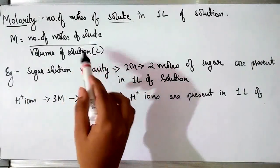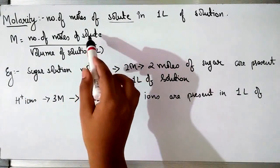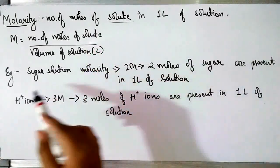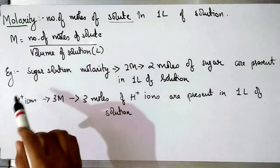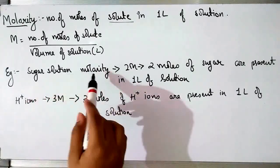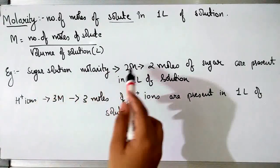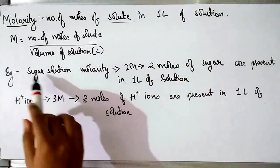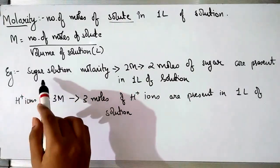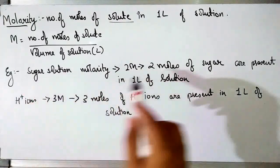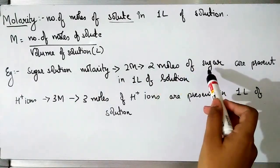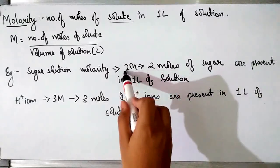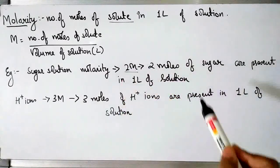The volume of solution should always be in litres and you have to calculate the number of moles of solute. For example, if the molarity of a sugar solution is 2M, it means that in this sugar solution, sugar is the solute, and 2 moles of sugar are present in one litre of solution. That is, the molarity is 2M.